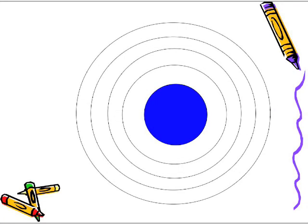We're going to look at the arrangement of an atom in terms of what we call a Bohr-Rutherford diagram. Right in the center, we have what we call the nucleus. Surrounding the nucleus are what we call orbitals or shells.